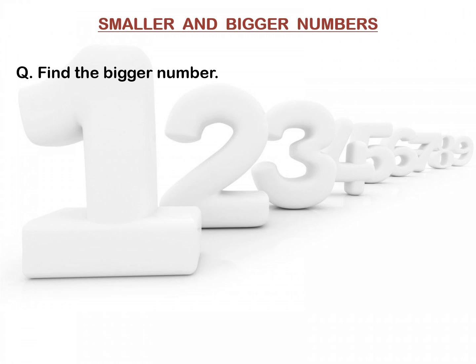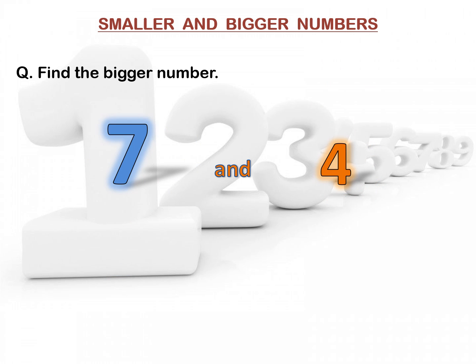Now, look at the next question. In this question, you have to find out the bigger number. The numbers are 7 and 4. First, we have to count the number of digits of each number. Our first number is 7 — it has only one digit, so it is a one-digit number. And the second number is 4 — this is also a one-digit number.